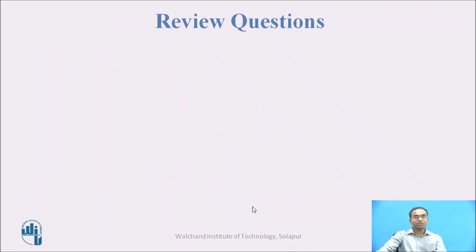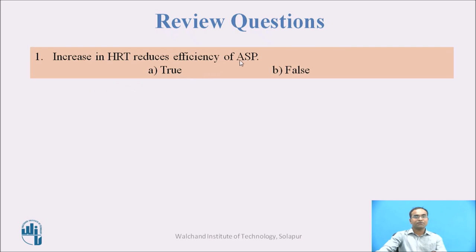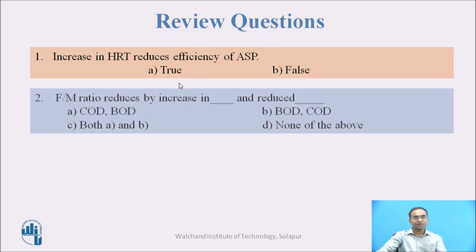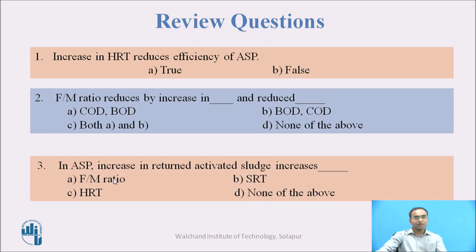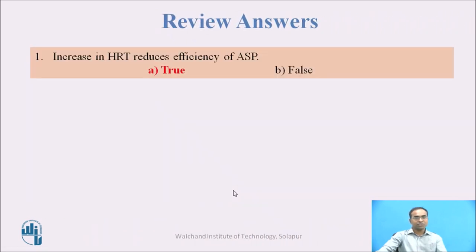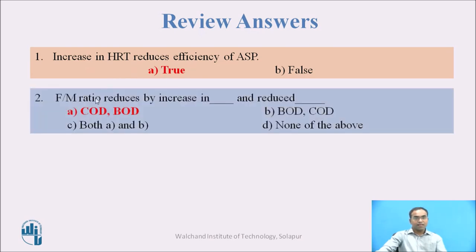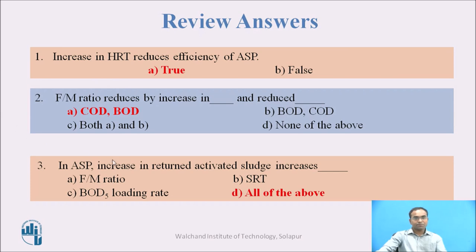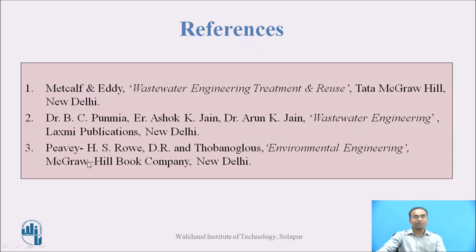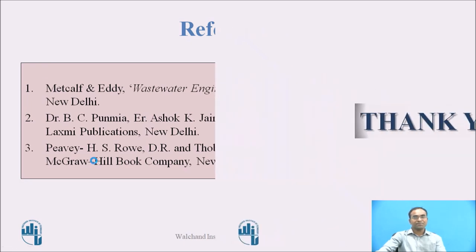Review questions: First — increase in HRT reduces efficiency of ASP, true or false? Second — F by M ratio is reduced by increase in what? Third — in ASP, increase in return activated sludge increases what? Answers: Increase in HRT reduces efficiency of ASP is true. F by M ratio reduces by increasing COD and reduced BOD. In ASP, increase in return activated sludge increases F by M ratio, SRT, BOD volumetric loading rate, and all of the above. Thank you.